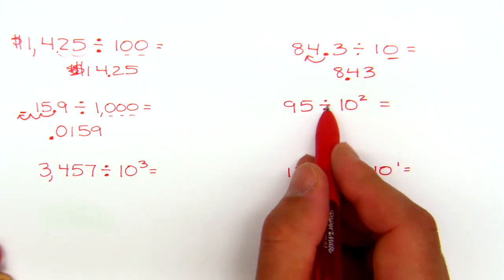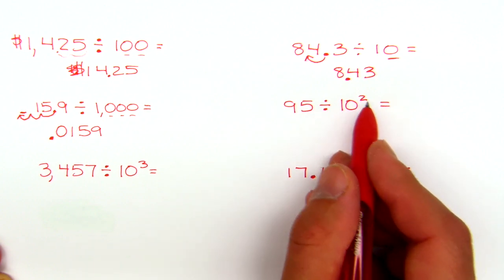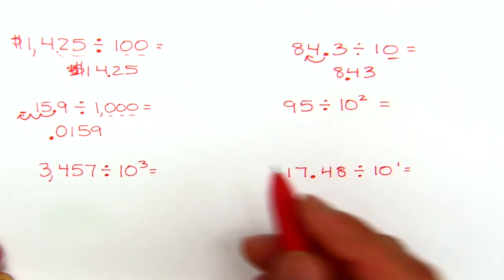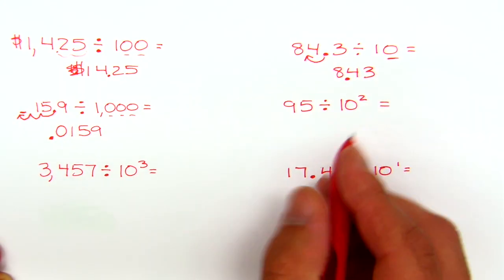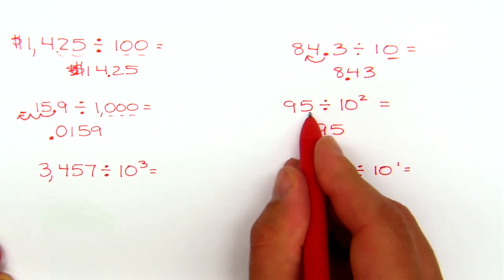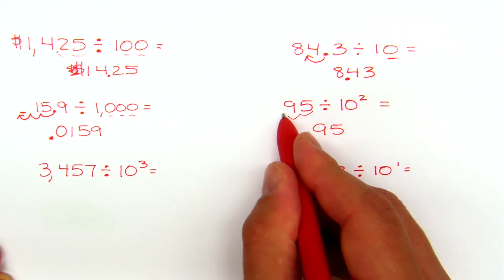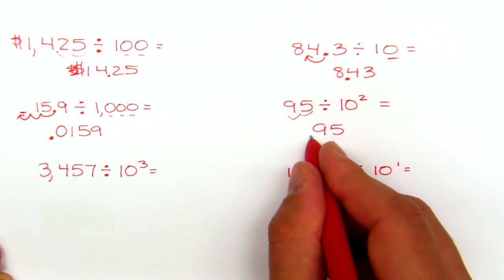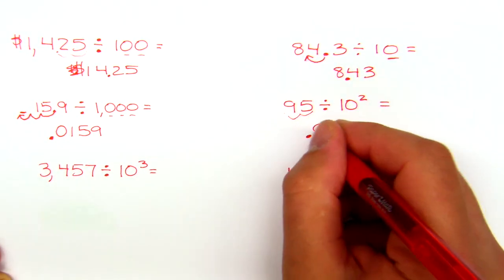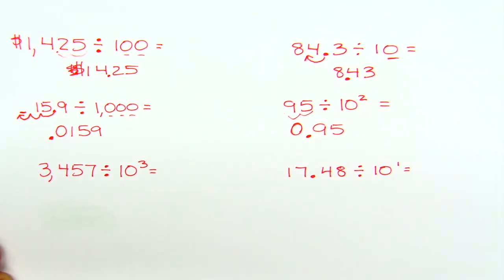This next one: ninety-five divided by ten to the second power. We know ten to the second power is two tens being multiplied — ten times ten — which is two zeros, or a hundred. There's no decimal written, but we know it's at the end. We're going to move it two places to the left: one, two — and it goes right there. So ninety-five divided by a hundred is ninety-five hundredths. You can put a zero in the whole number spot if you like, but you don't really need it.